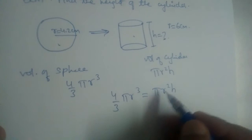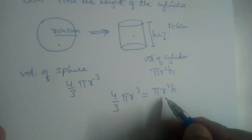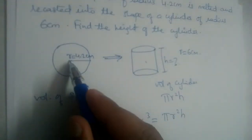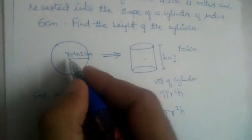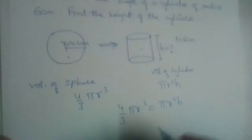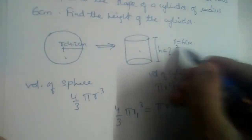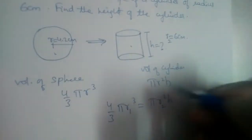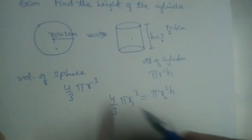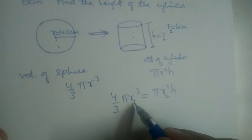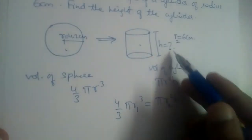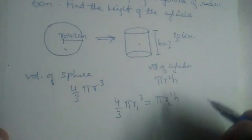Don't cancel r and r here, because these r's are different. Let us take the sphere's radius as r1 and the cylinder's radius as r2. r1 is the radius of the sphere and r2 is the radius of the cylinder.